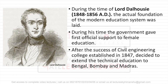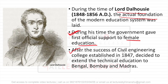During the time of Lord Dalhousie, another Governor General of India, he laid the actual foundation of modern education in India. During his time, the government for the first time gave official support for female education — earlier it was on paper but not officially or openly supported. After the success of the Civil Engineering College established in 1847, he extended technical education to Bengal, Bombay and Madras.